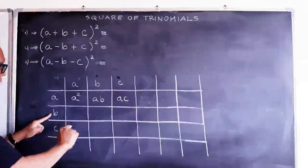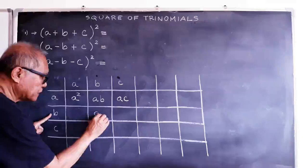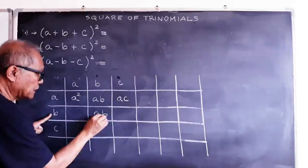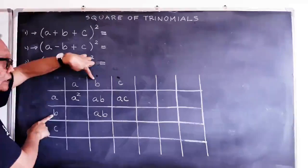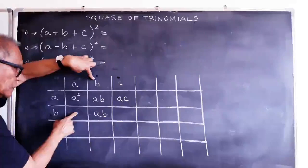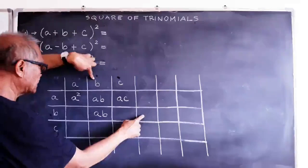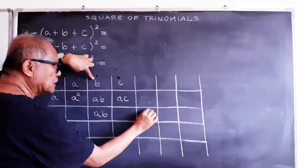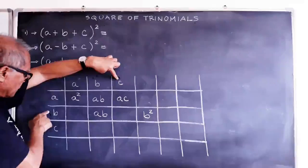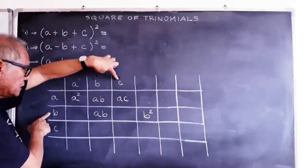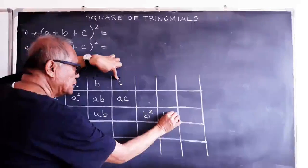Then after this, we have A times B which is positive AB, and A times C is AC. Now let's have the B row. B times A is BA or AB. After this, B times B is B squared — we put B squared in the vacant slot. And B times C is BC.